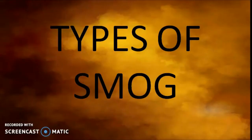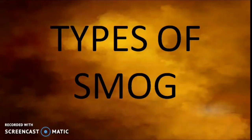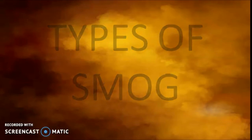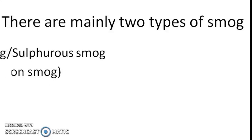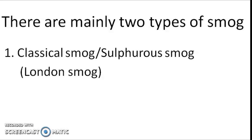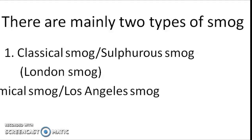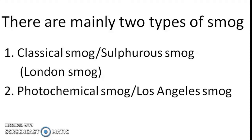In this presentation, we shall discuss all the different types of smog. There are basically two types of smog. Number one, the London smog or the classical smog or the sulphurous smog. Number two, the Los Angeles smog or the photochemical smog. London smog is also called classical smog or sulphurous smog, and it is also called reducing smog.